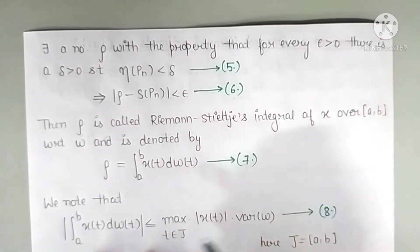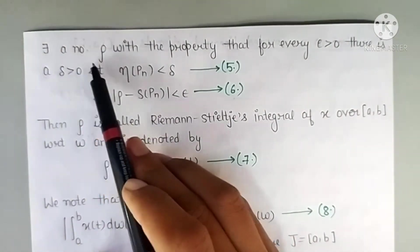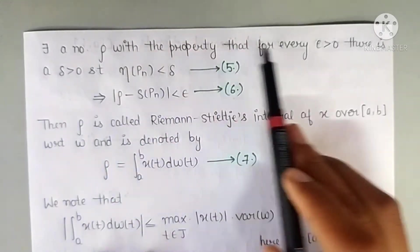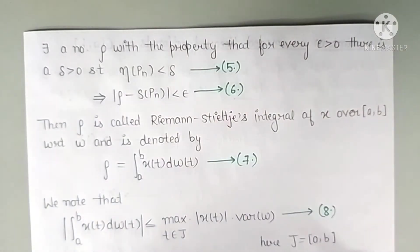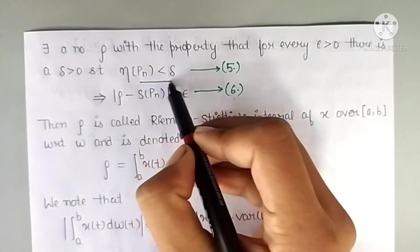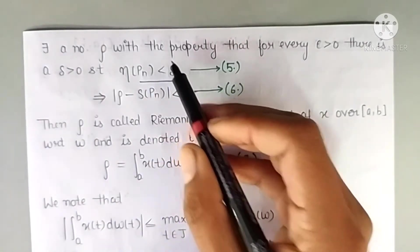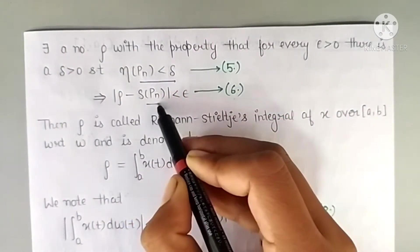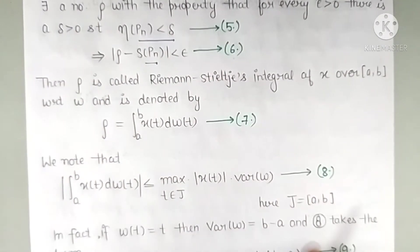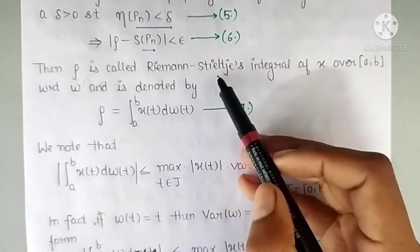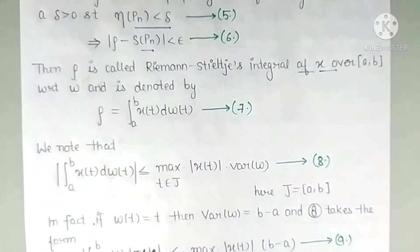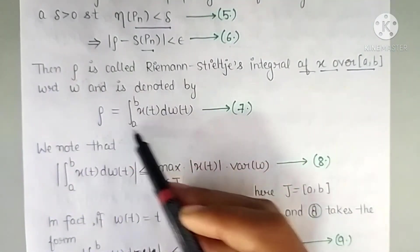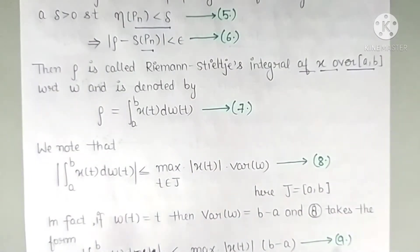This implies there exists a number ρ such that for every ε > 0, there is a δ > 0 with the property: whenever η(P_n) < δ, we have |ρ − S(P_n)| < ε. This is the epsilon-delta convergence definition (equations 5 and 6). Then ρ is called the Riemann-Stieltjes integral of x with respect to w, denoted accordingly.